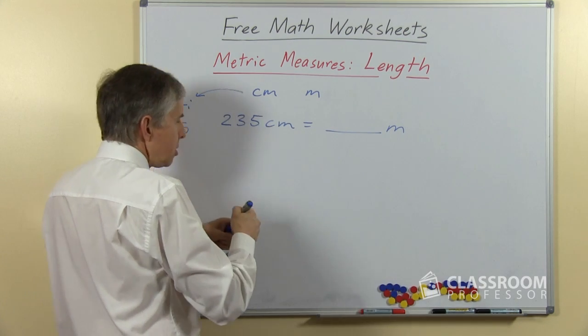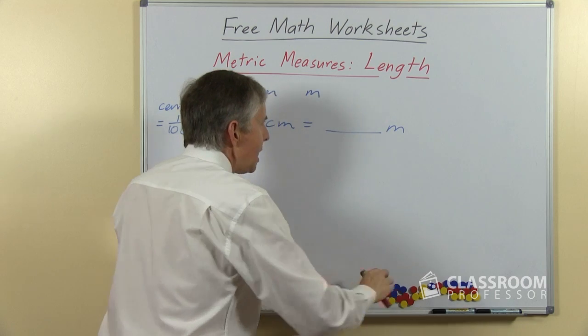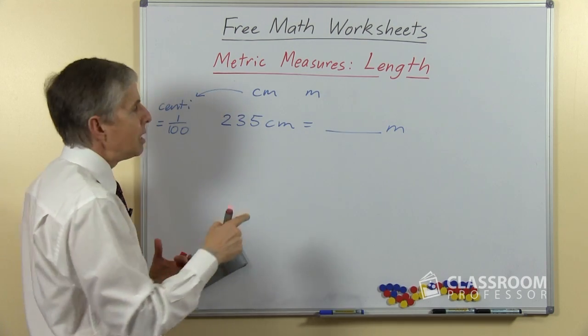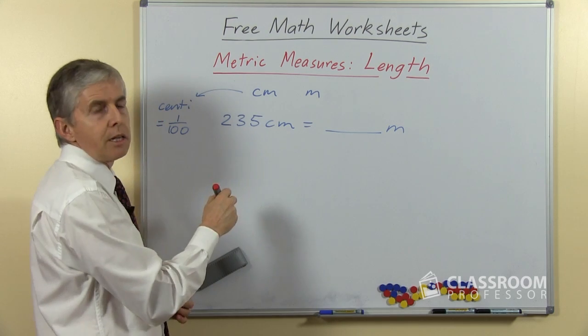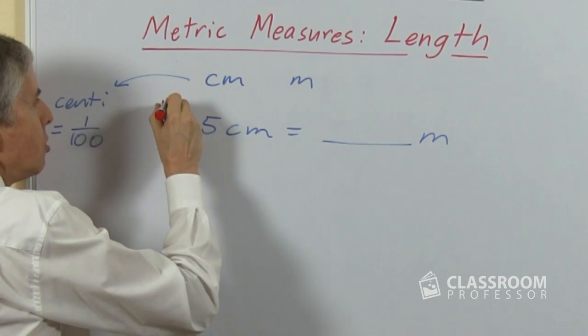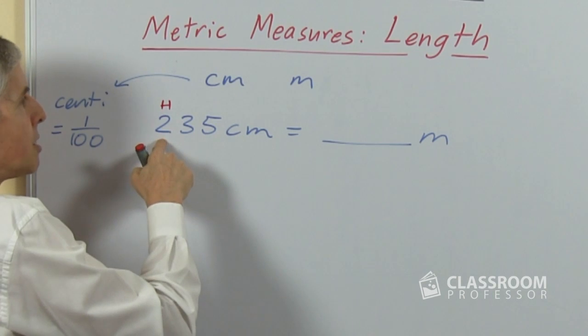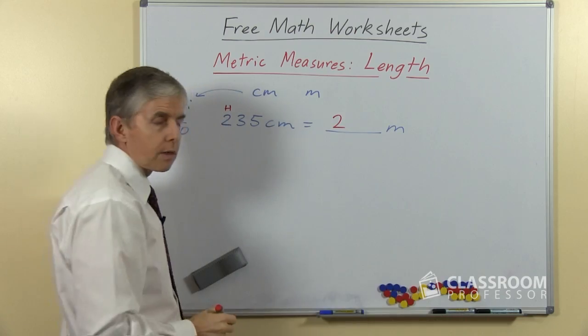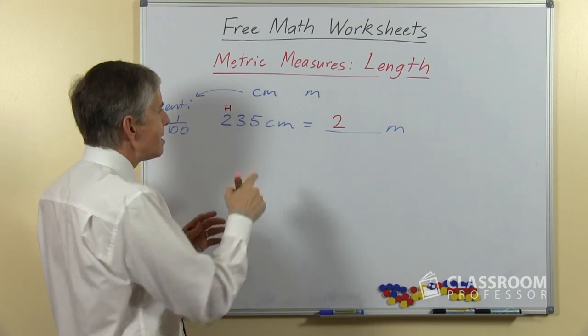So in this question I would say to you how many hundreds are there? Because this is about hundreds of centimeters. Which of these numbers is in the hundreds place? Of course it's the 2. So the 200 centimeters must become 2 meters, 2 meters. 2 whole meters is 200.